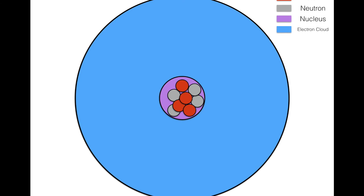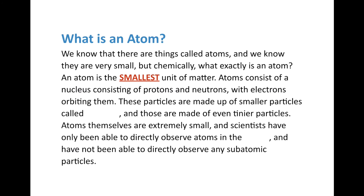These particles, particularly protons and neutrons, are made up of smaller particles called quarks. There are six different types of quarks. We're not going to go into detail — just know that there are quarks, and those are made of even tinier particles. The more and more we directly observe atoms, the more we're learning about them.